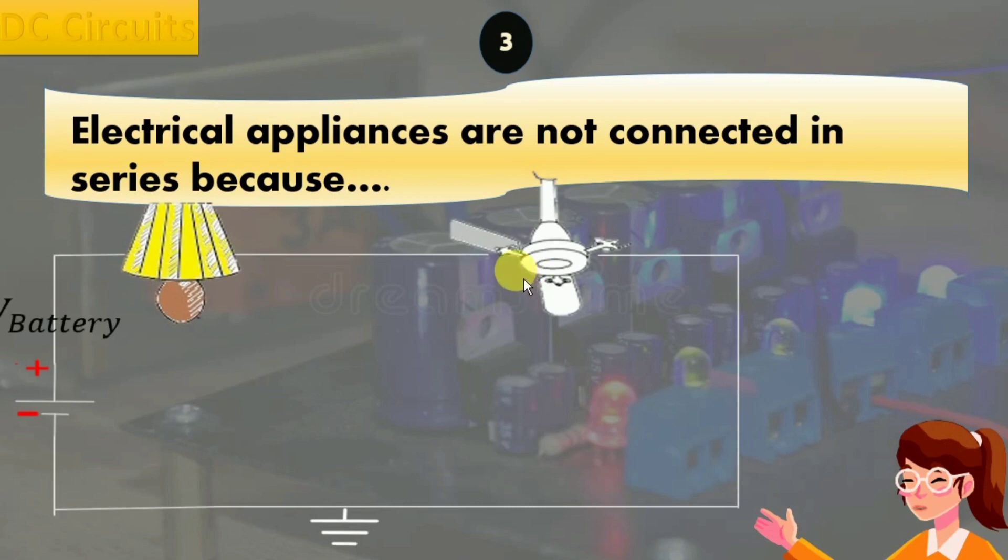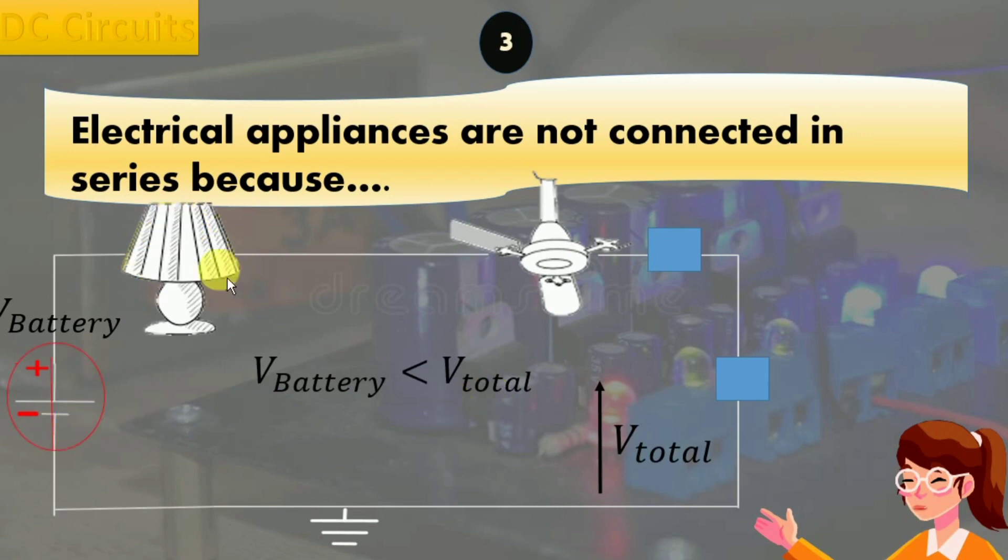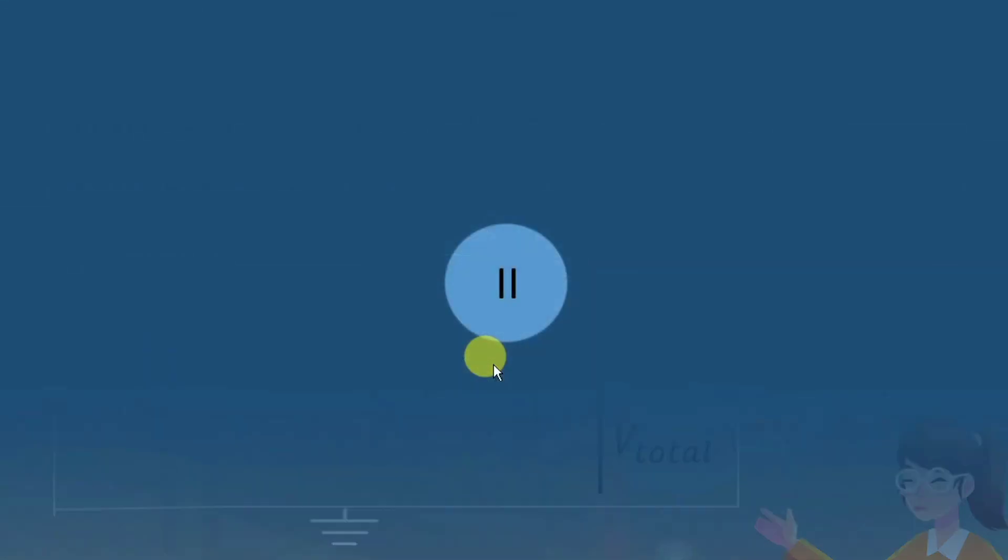Number one: as we know, current is same in a series circuit and voltage is different. This voltage will increase if we increase the number of appliances. When the total voltage inside this circuit becomes greater than the voltage of the battery, the battery could short circuit and cause extensive damage.